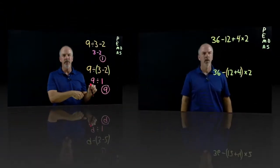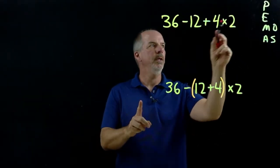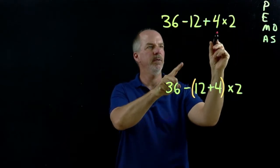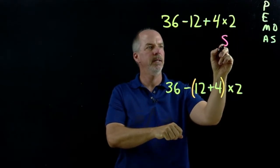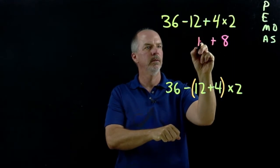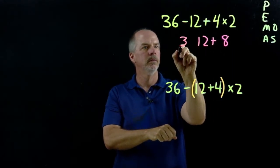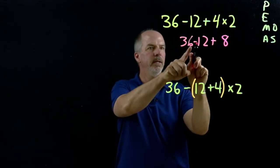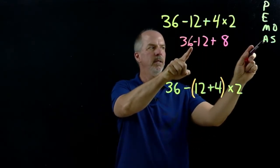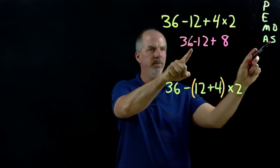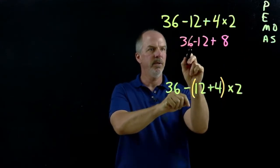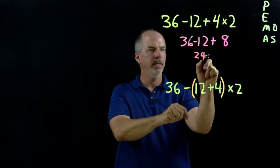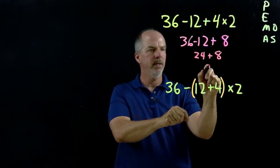Let's look at another one. In this one we again have no parentheses, no exponents. We do have multiplication so we'll do that first: 4 times 2 is 8. We'll bring everything else down. Now we have subtraction and addition — whichever comes first, left to right. So we subtract first. We have 24 plus 8 and that's 32.